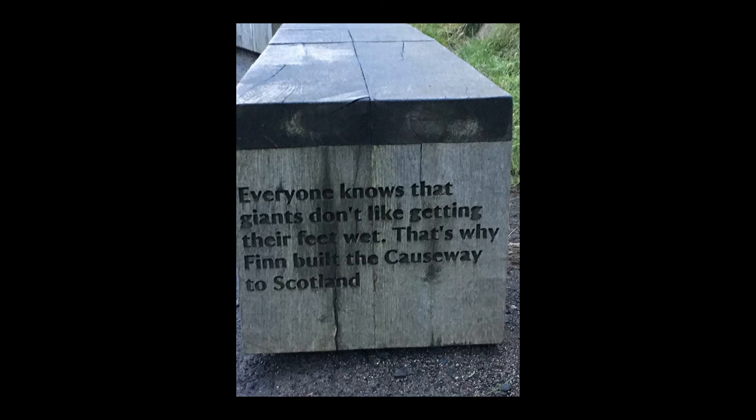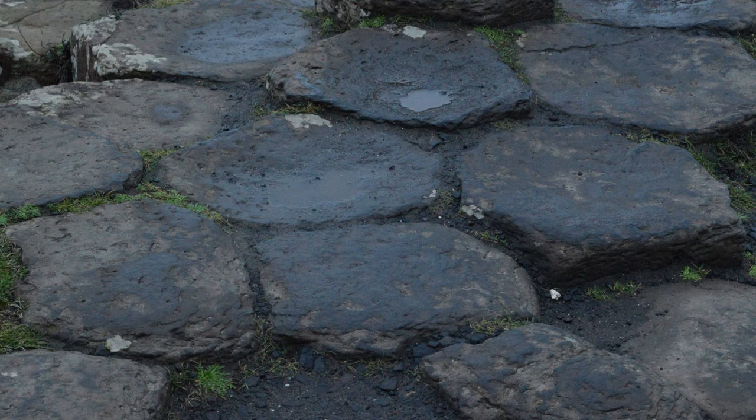The Giant's Causeway in County Antrim, Northern Ireland is an area of thousands of basalt columns joined together. Legend says it was built by Irish Giant Finn McCool so he could meet a Scottish Giant to fight. Interestingly, the majority of the columns are naturally hexagonal, a result of basaltic lava cooling, contracting, and fracturing. The rate of cooling determines the size of the columns — if they cooled quickly, they would have been smaller.